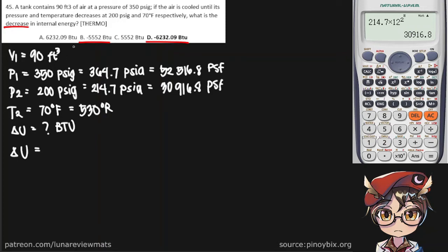So, it looks like there is no mention of the volume changing, so we can assume that this is a constant volume process. And if it's a constant volume process, we can find the internal energy by multiplying the mass of our air by the specific heat at constant volume and of course, our temperature difference.